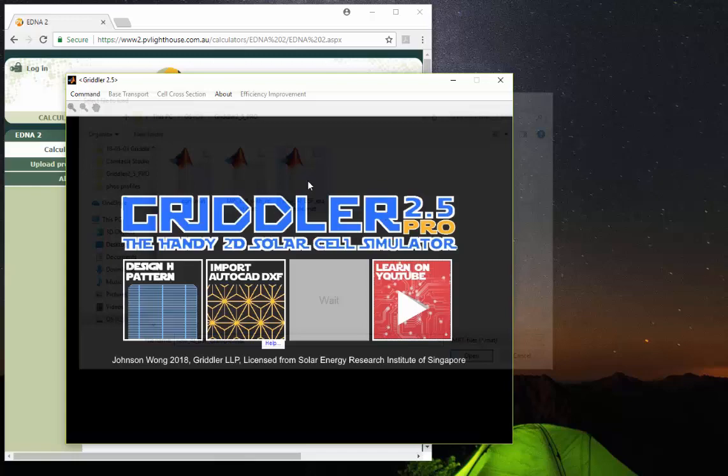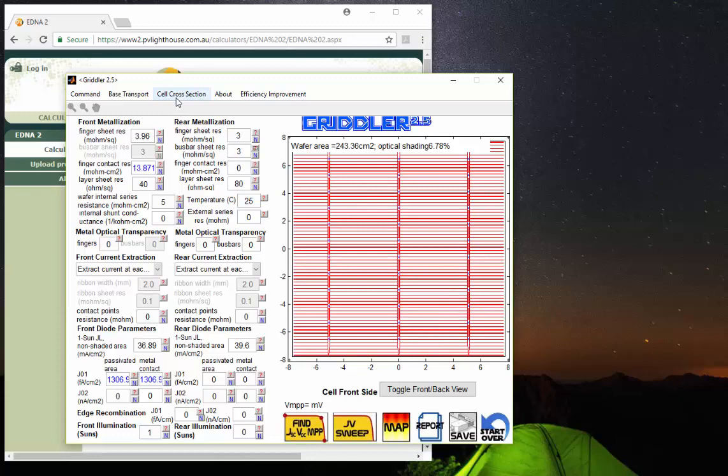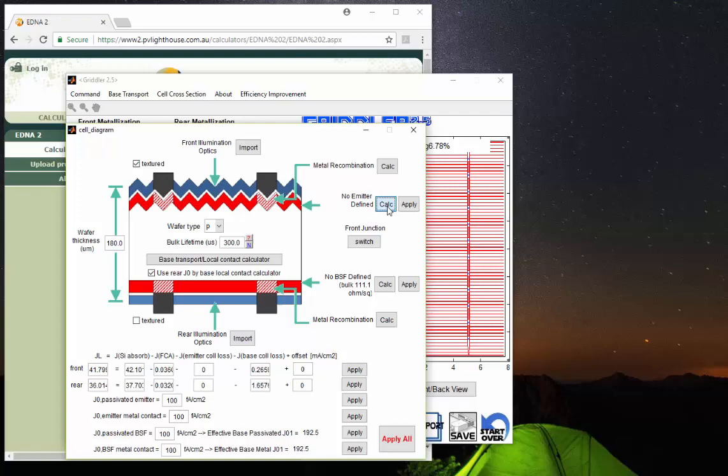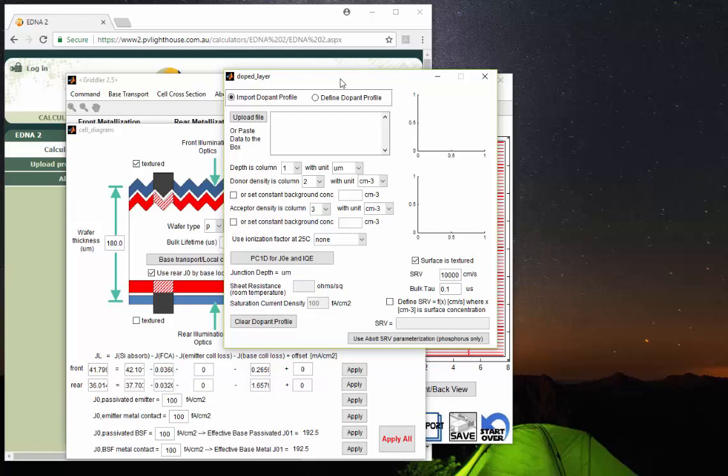Okay, so back to the process of running emitter simulations. We're just going to load an example cell. And then from here, we go to cell cross-section. And next to the emitter, we hit Calc. And that brings up this dope layer window. And this is our interface to PC1D.